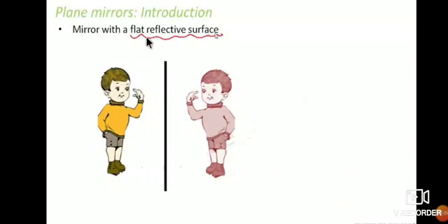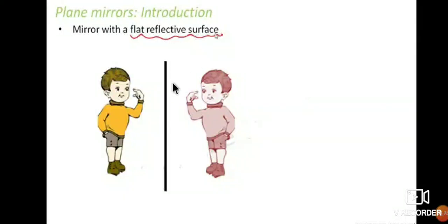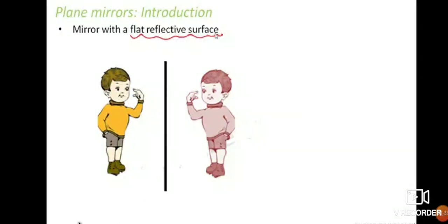So what do we mean by plane mirror? A plane mirror is a mirror with a flat reflective surface. The image seen on the mirror is called a reflected image. Plane mirrors are those with a flat reflective surface — the surface is flat.